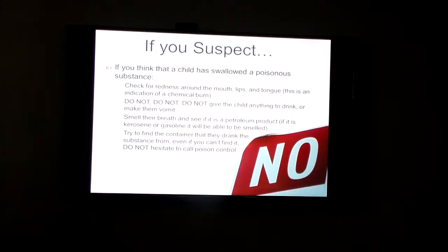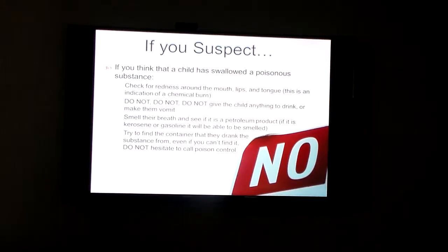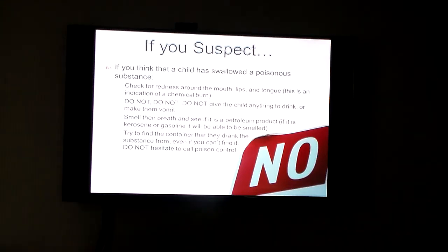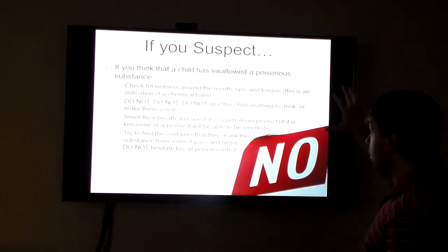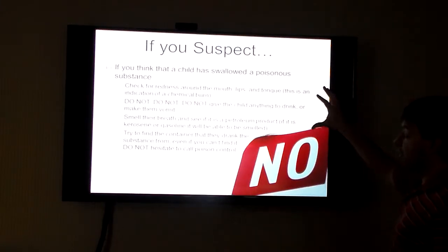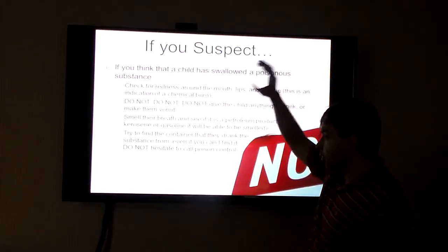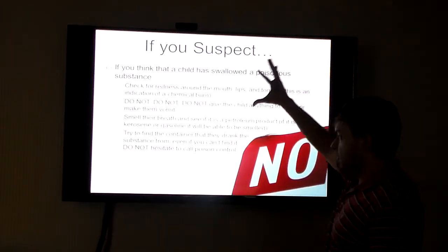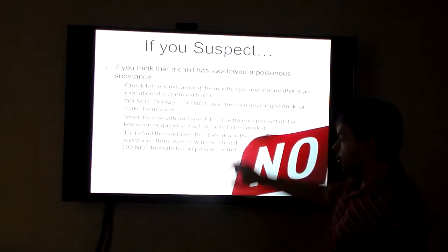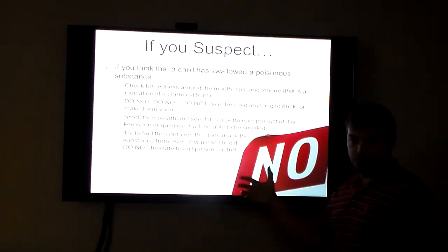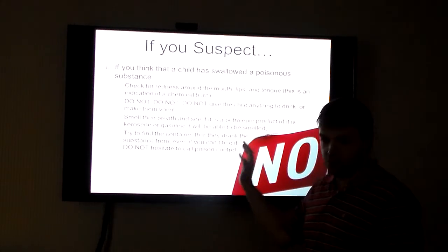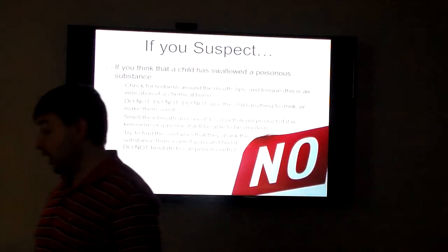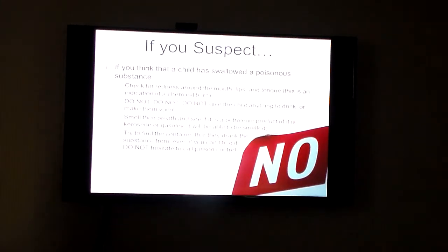If a child has swallowed a poisonous substance, one of the most important things is: do not give them anything to drink or make them vomit. You want to check for a chemical burn, see if something can be smelled on their breath, and try to find the container they drank it from. Try to retrace their steps, call poison control immediately, and they can give you advice and guidance on what you should be doing.